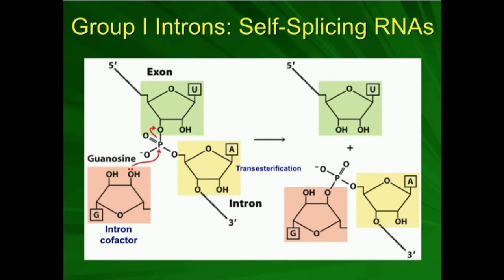Another important processing of mRNA and some other types of RNA is splicing. It turns out there are a lot of different types of splicing, and we're going to go over three types here. There's a fourth type that occurs for transfer RNAs that we'll cover in a different video. There are what we call self-splicing RNAs — a process of splicing that does not require a protein. There are two groups: group 1 introns and group 2 introns.